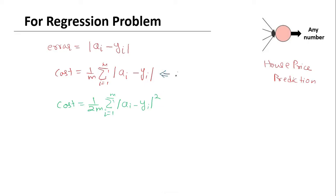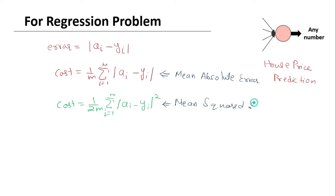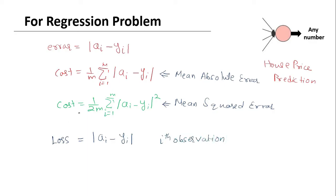The first cost function is called mean absolute error while the second is called mean squared error. Also note: you might have heard of the term loss or loss function — so what is that? Loss is the error for one observation, so loss is given by ai minus yi for the ith observation. The cost function is then given by the average of all those individual errors.